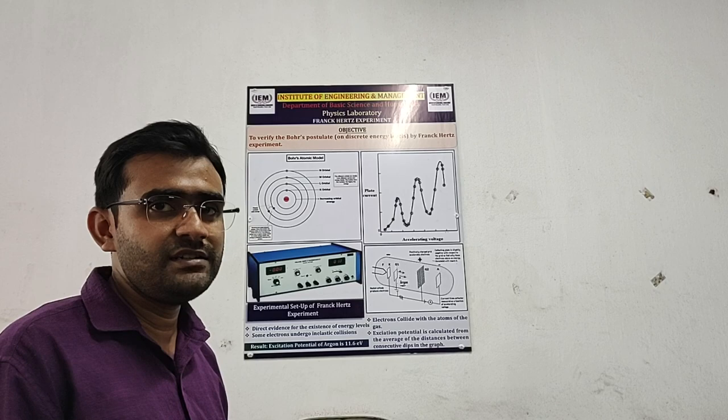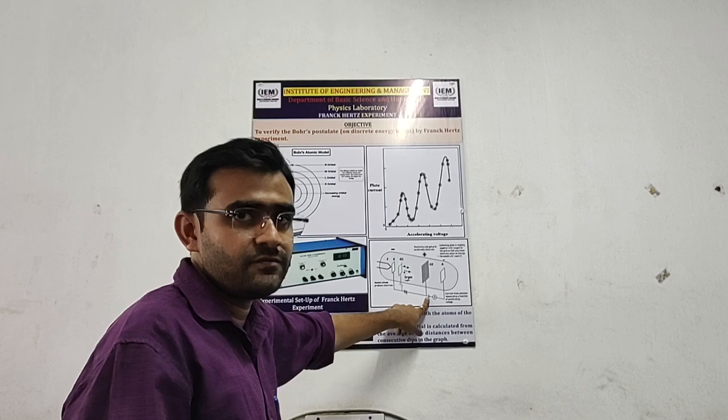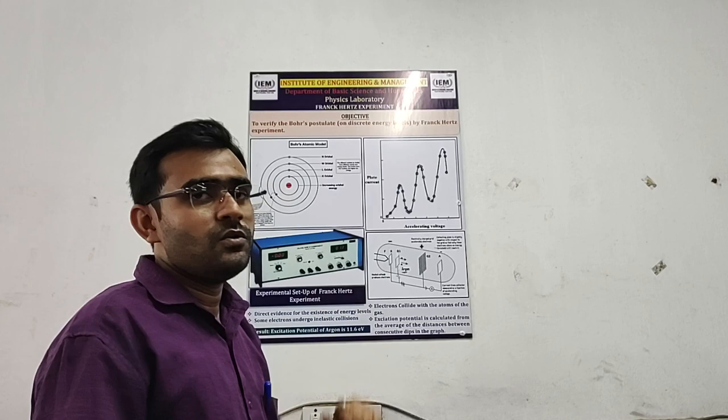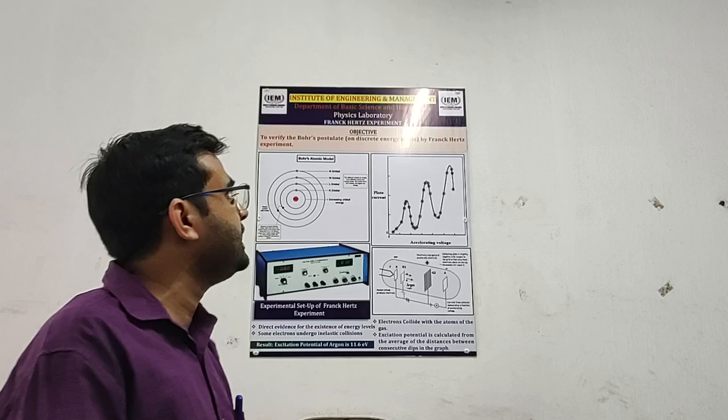From the accelerating voltage that you are supplying from 0 to 90 volt will be plotted in the x-axis and corresponding current that we are getting from the display will be plotted towards the y-axis. And if you plot this, you will be getting this kind of discrete nature of the graph.